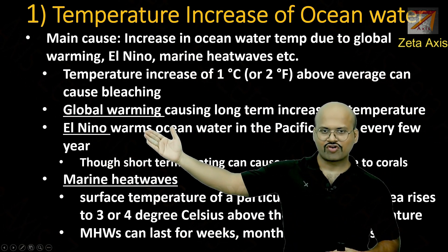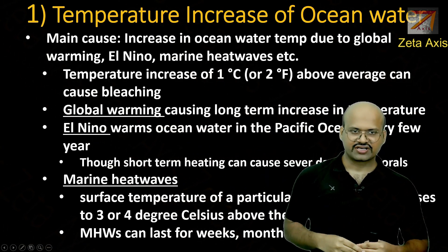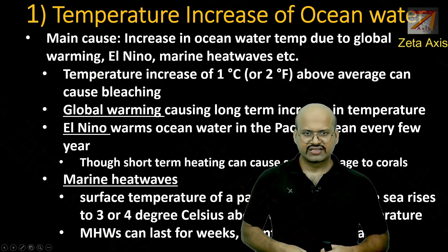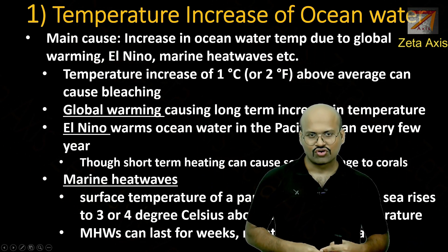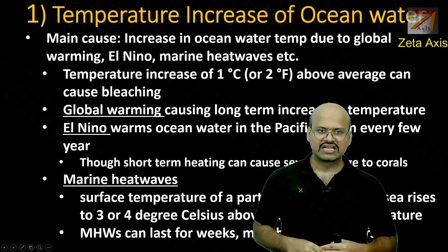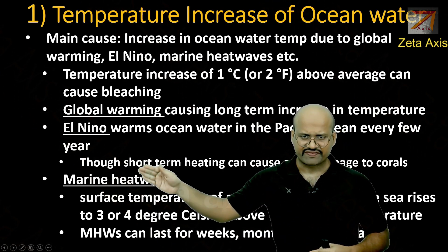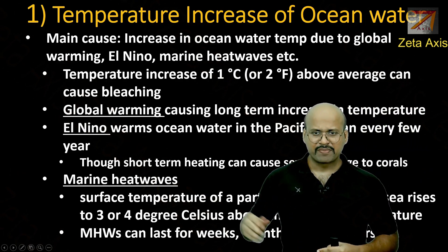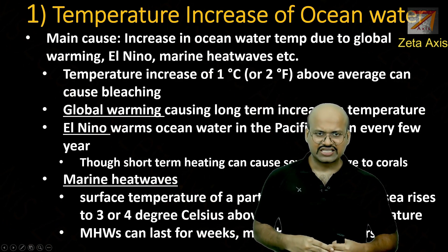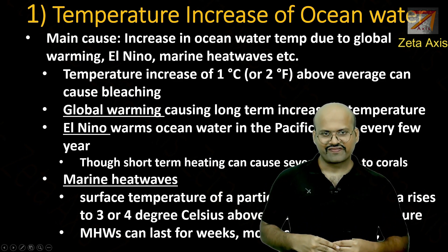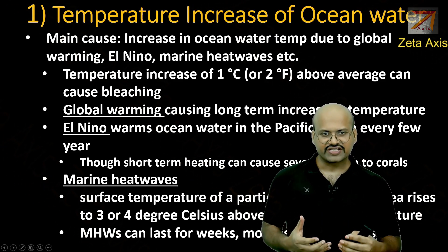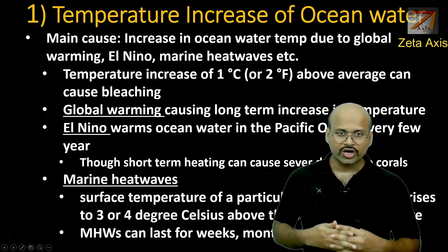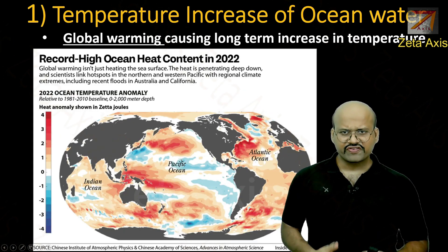Global warming is increasing the ocean water temperature and its effects will last for longer time periods. Next is El Niño, which increases the temperature of water in the Pacific Ocean every few years. This effect lasts for several months and can cause severe damage to coral reefs. Marine heat waves are another phenomenon where certain regions of ocean water trap heat and remain above average temperature for a very long duration. These phenomena also cause coral bleaching.